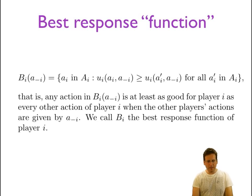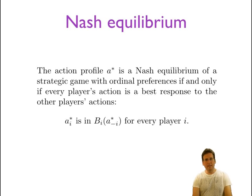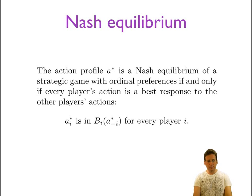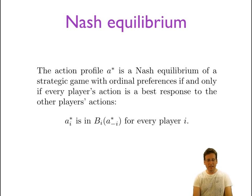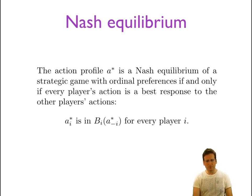Each player has a best response function, and we can define Nash equilibrium as follows: the action profile a star is a Nash equilibrium if and only if every player's action is a best response to the other players' actions. In other words, for every player, a star sub i — the action choice in a star — is the best response to a star sub not-i, which is the action choices of all the other players.